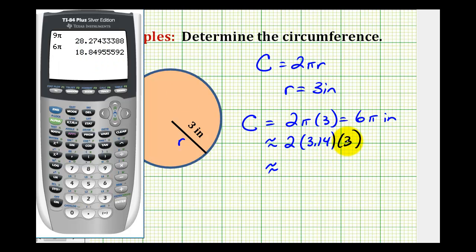Just to show this calculation where we use an approximation for pi, we'd have two times three point one four times three. And notice how the answer is slightly different. For six pi, if we round to the hundredths, we have eighteen point eight five. Here if we round pi before we multiply, we only have eighteen point eight four.